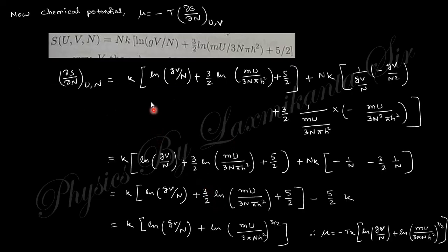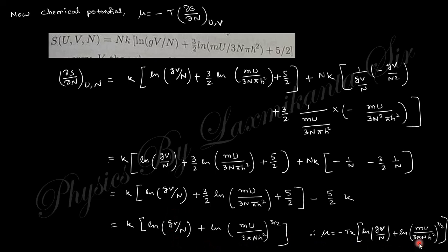For the chemical potential μ: by definition, μ = −T(∂S/∂N)_{U,V}. Differentiating S with respect to N and simplifying — the derivative of the Nk term and the logarithmic terms with respect to N — yields the expression for μ. The simplification is straightforward, giving the final expression for the chemical potential of the ideal monatomic gas.